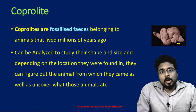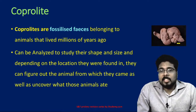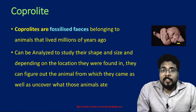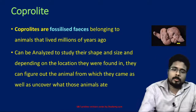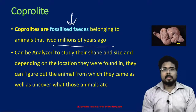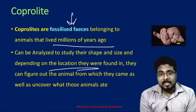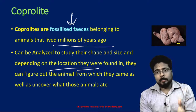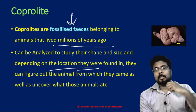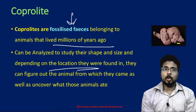Next, coprolite. Coprolites are fecal fossils — normally fossils are the remains of dead animals that died long ago. Coprolite is specifically the fecal remains of those dead animals, fossil feces belonging to animals that lived millions of years ago. These can be analyzed to study their shape and size, and depending on the location where they are found, we can determine what type of animals used to live there, what they consumed, and whether there were any genetic or dietary changes over history.